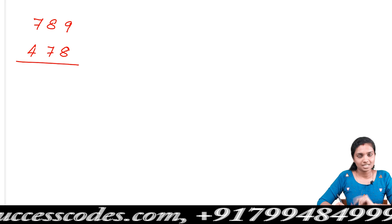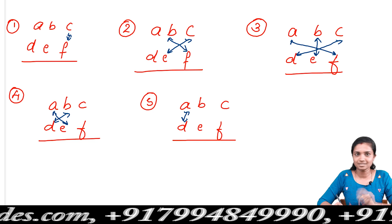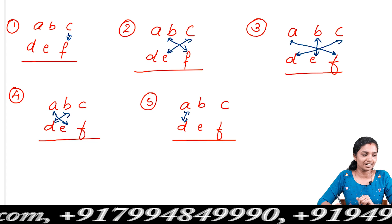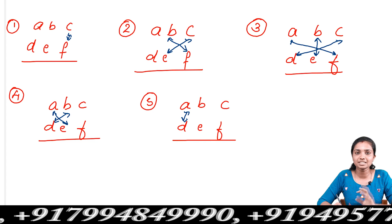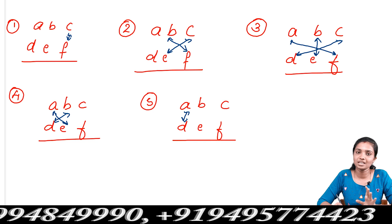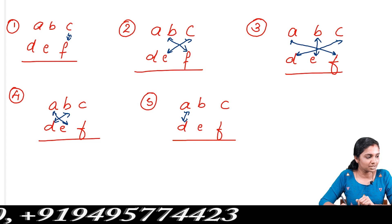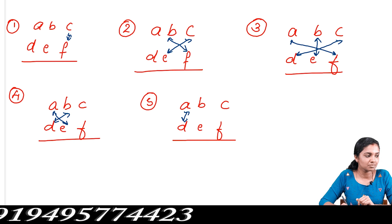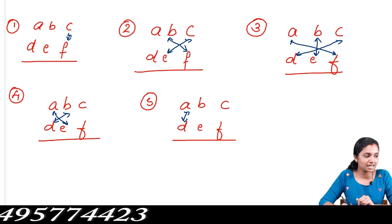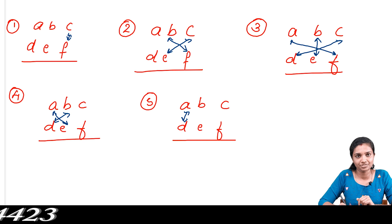Now, let's write here 5 steps. For this method, we use 3-digit numbers labeled A, B, C and D, E, F. I have to write these numbers.